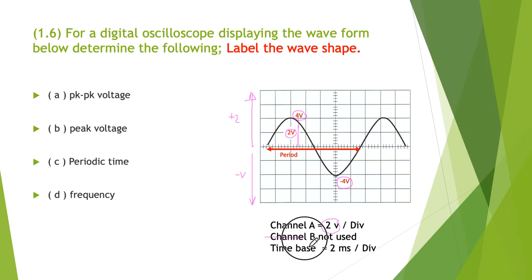They tell us channel B is not used, so don't have to worry about it. They tell us the time base is two milliseconds per division. The horizontal on an oscilloscope is always time. Let's just label that time. Two milliseconds a division, so that's two milliseconds, and that's two milliseconds, and that's two milliseconds. I'm not going to fill in all the two milliseconds all the way across the bottom - I think you get the point.